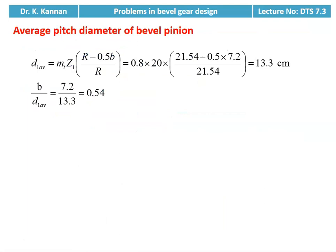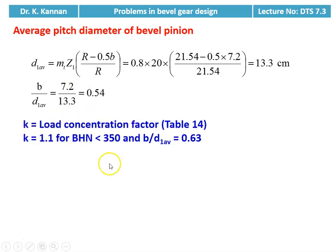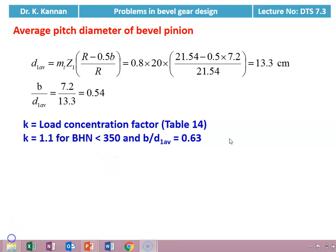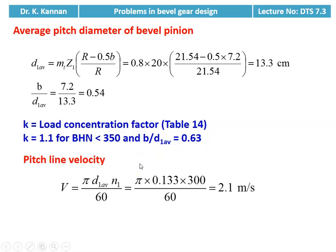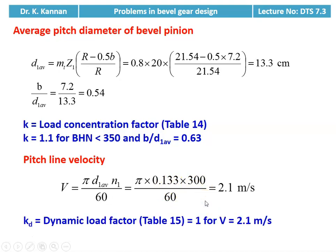We calculate the average pitch diameter of the bevel pinion: D1_avg = mt × Z1 × (R − 0.5b) / R = 0.8 × 20 × (21.54 − 0.5 × 7.2) / 21.54 = 13.3 cm. We calculate b / D1_avg = 7.2 / 13.3 = 0.54. We take load concentration factor k = 1.1 for BHN < 350 and b/D1_avg = 0.63 from table 14. Pitch line velocity: v = π × D1_avg × N1 / 60 = π × 0.133 × 300 / 60 = 2.1 m/s. Dynamic load factor kd = 1 for velocity 2.1 m/s from table 15.